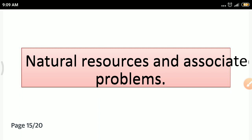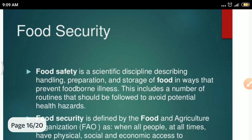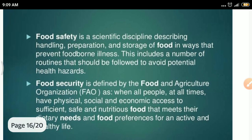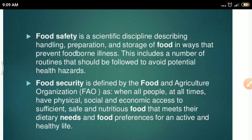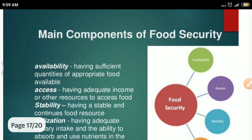If we continuously use natural resources, it leads to major problems, primarily food security. Food security can be categorized into food safety and food security. Food safety refers to the availability of quality food — it is the scientific discipline describing the handling, preparation, and storage of food. Food security addresses how to fulfill the demands of our growing population.